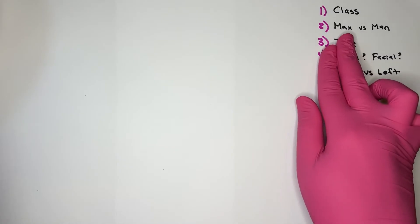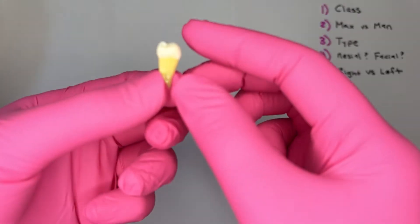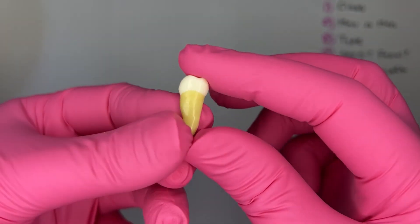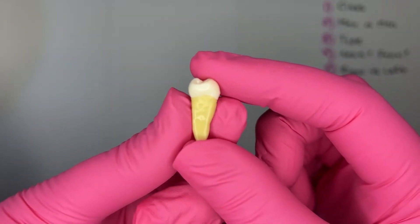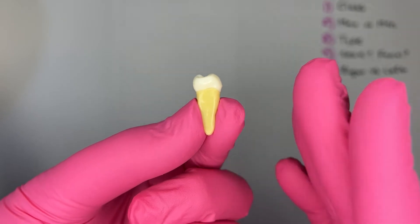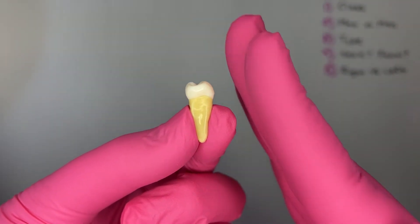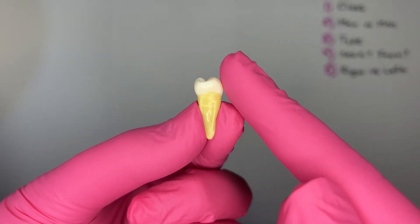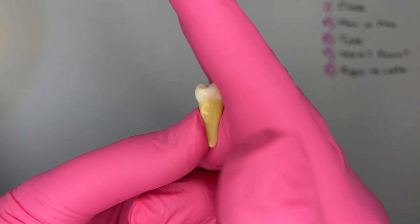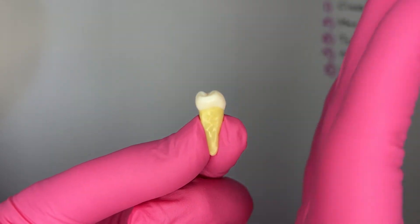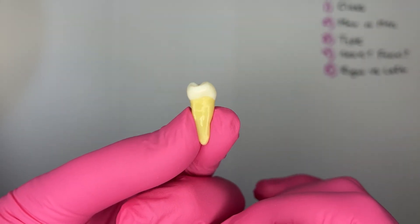Step number two, is it a maxillary or mandibular premolar? If I take a premolar and I look at it from the proximal view and I look at the crown versus the root, if I see a tilt I know that this is a mandibular premolar and in this case I do see a tilt. It's not straight with the root, it's tilted to one side, specifically the lingual.